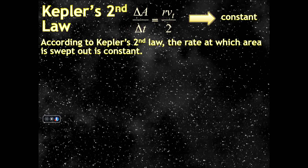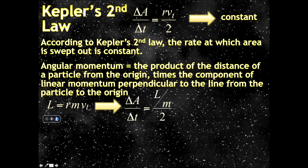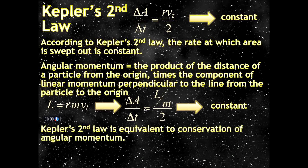According to Kepler's second law, the rate at which area is swept out is a constant. So delta_A over delta_t is a constant. This is essentially the same as angular momentum — it's the product of the distance of a particle from the origin times the component of linear momentum perpendicular to the line, which is Vt. The angular momentum L equals the distance from the origin times the mass of the particle times its tangential velocity, so we get L over M instead of r·Vt. This constantness is just equivalent to the conservation of angular momentum.